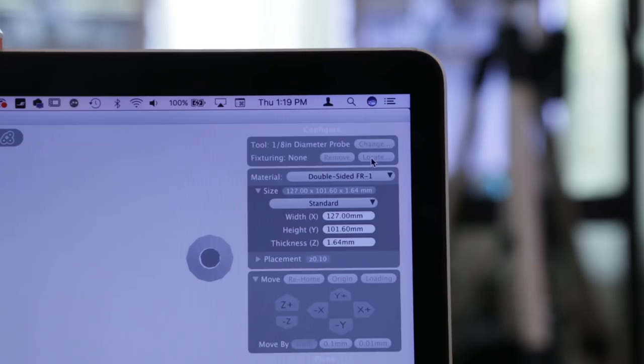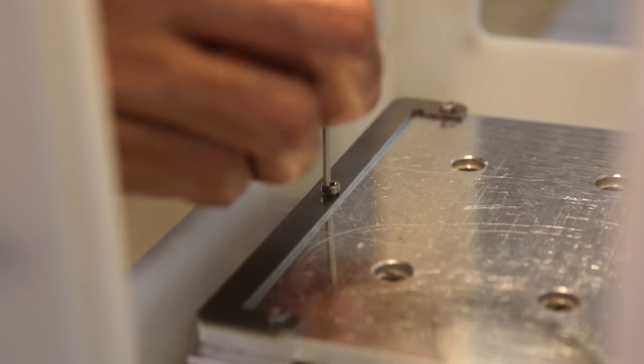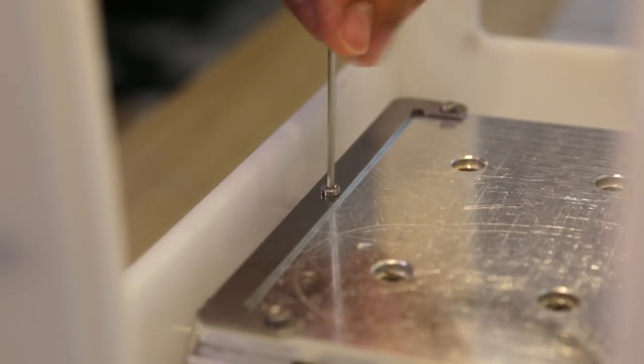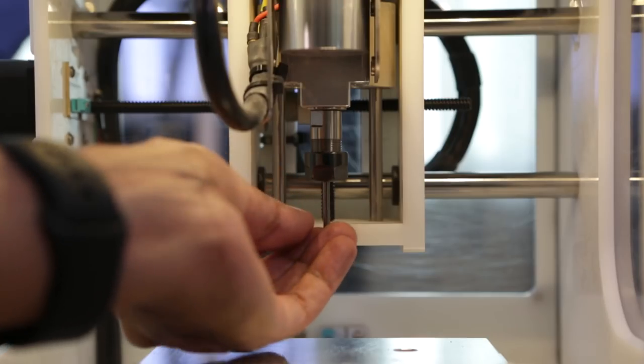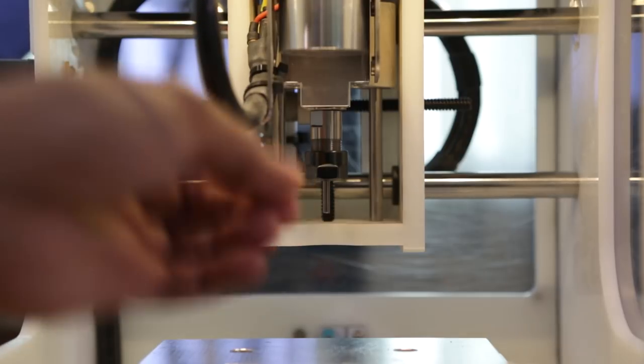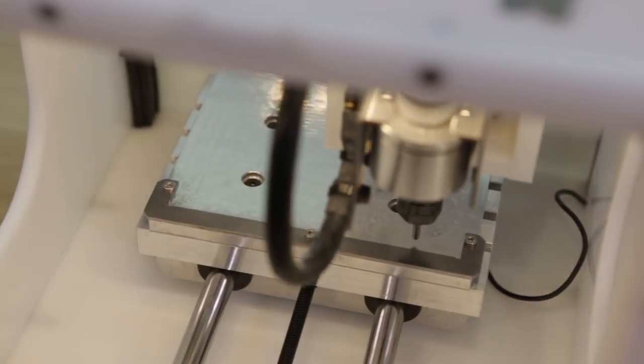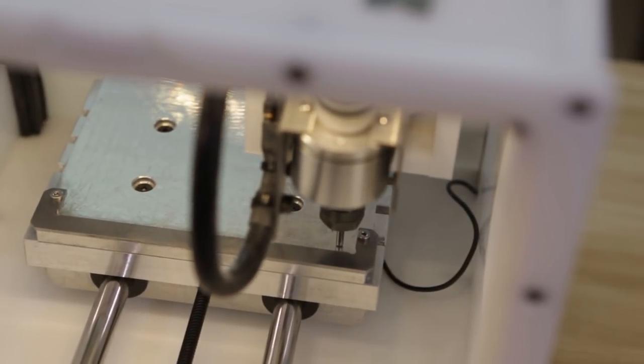In order to do double sided PCBs, first we'll have to set up the fixture. This alignment bracket is secured to the edge of the spoil board with machine screws. The tool head uses the bottom of an end mill to probe the edges of the bracket. This touches various areas and stores the offset so the machine knows the exact placement of the material.